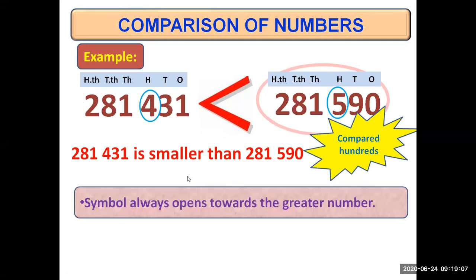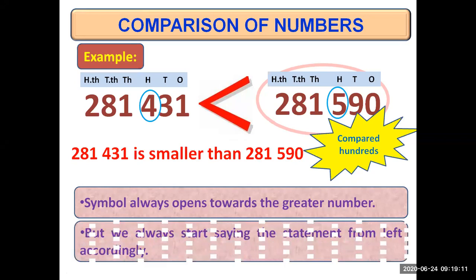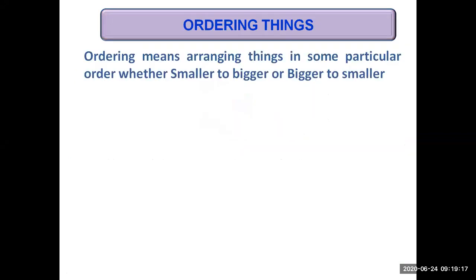The symbol always opens towards the greater number, and we always start saying the statement from left. The next thing we are going to study today is ordering, which means arranging things in some particular order — whether arranging from smaller to bigger or from bigger to smaller.